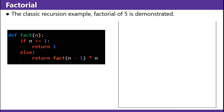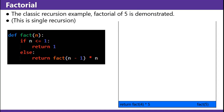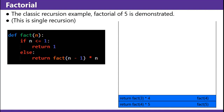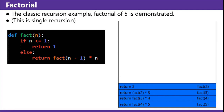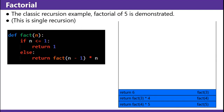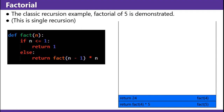Factorial — the classic recursion example. Factorial of 5: you return factorial of 4 times 5. You gotta do the function call before you can return anything, so you call factorial of 4. Factorial of 4: return factorial of 3 times 4. Factorial of 3: return factorial of 2 times 3. Factorial of 2: return factorial of 1 times 2. Factorial of 1: return 1. You hand the answer back to the previous function: return 2, return 6, return 6 times 4 which is 24, and factorial of 5 ends up equaling 120.